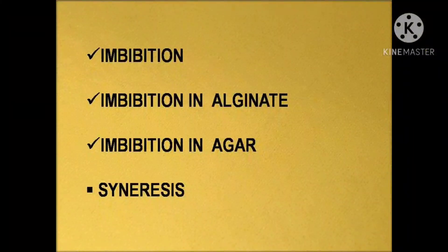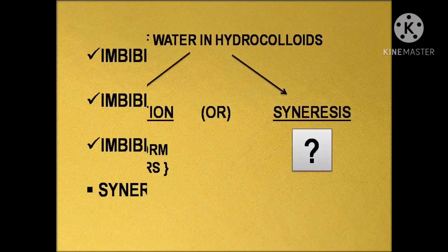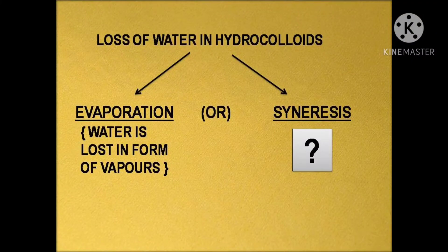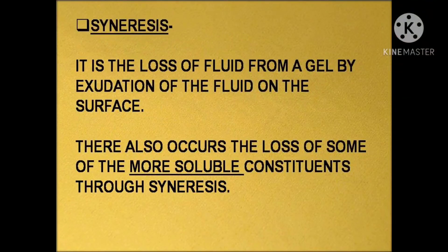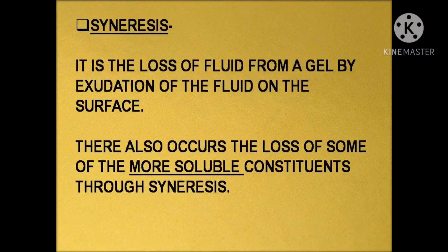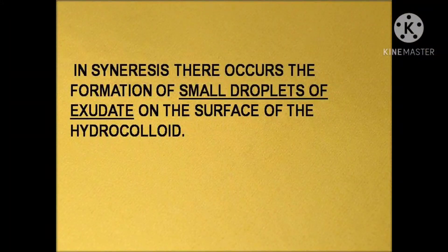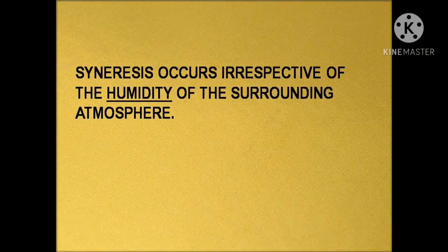Up till now we have learnt what is imbibition and how it differs in alginate and agar. Let's now move to the next concept, which is syneresis. Water loss in hydrocolloids can occur either through evaporation or through syneresis. Syneresis is the loss of fluid from a gel by exudation of the fluid from its surface. Along with the loss of fluid, there will also occur the loss of some of the more soluble constituents from the gel. In syneresis, there is the appearance of small droplets of exudate on the surface of the hydrocolloid. Syneresis will occur irrespective of the humidity of the surrounding atmosphere.